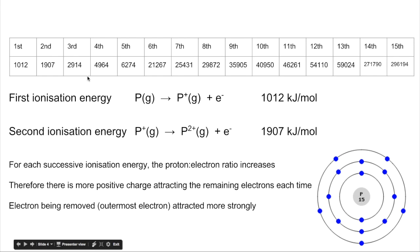So why is it taking more energy each time? And that's because essentially when you're removing the first electron, you're removing the electron from an atom and so therefore you've got the same number of electrons to protons. So we've got a proton to electron ratio of one to one.